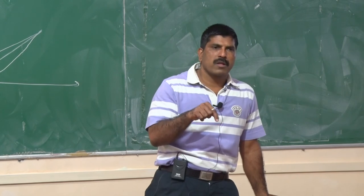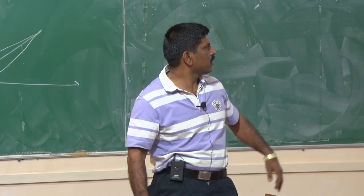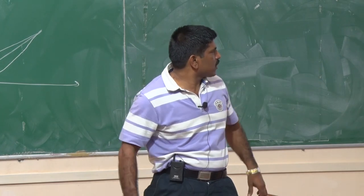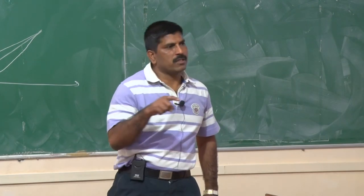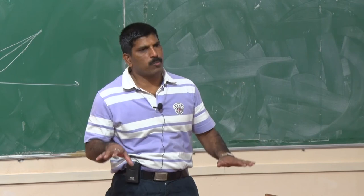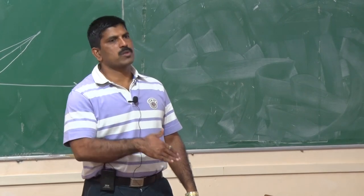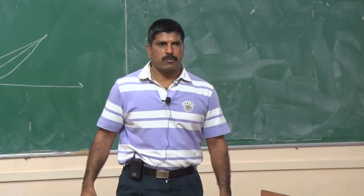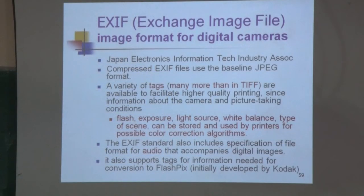TIF can store many different types of images — binary, grayscale, 8-bit color, or 24-bit color. It is originally a lossless format but also supports compression like JPEG. The TIF format was developed by Aldus Corporation in the 1980s and was later supported by Microsoft. When you store an image in .tif format, you get a lot of information about the image itself.